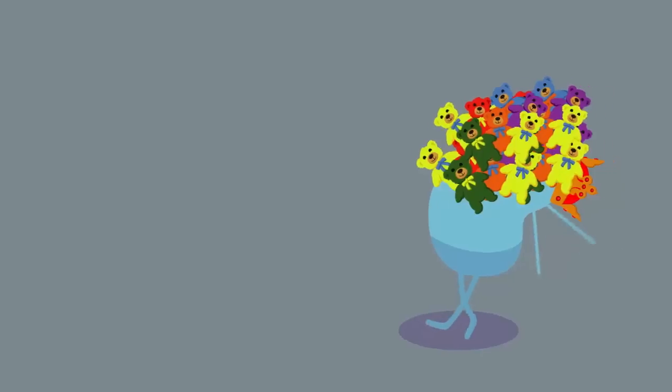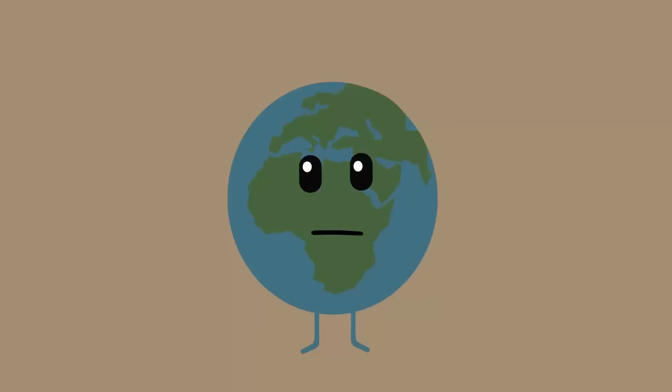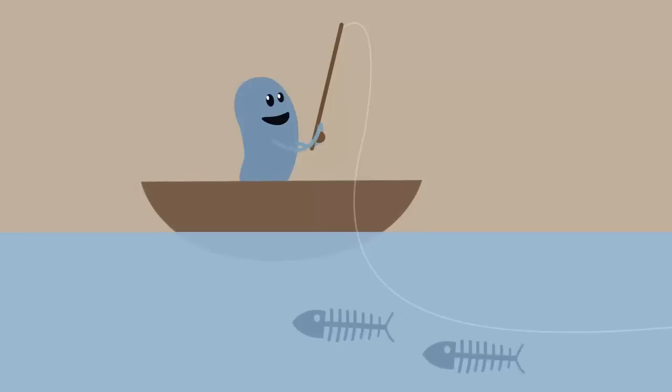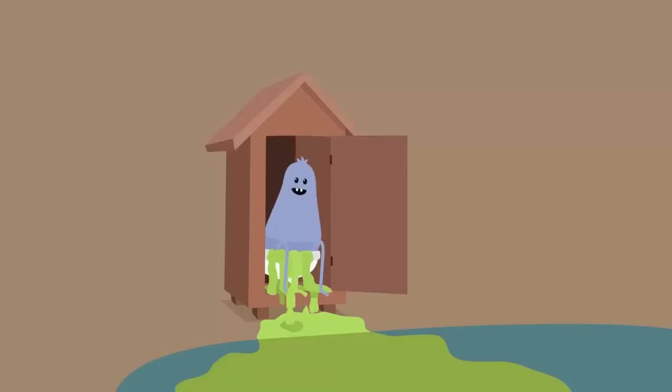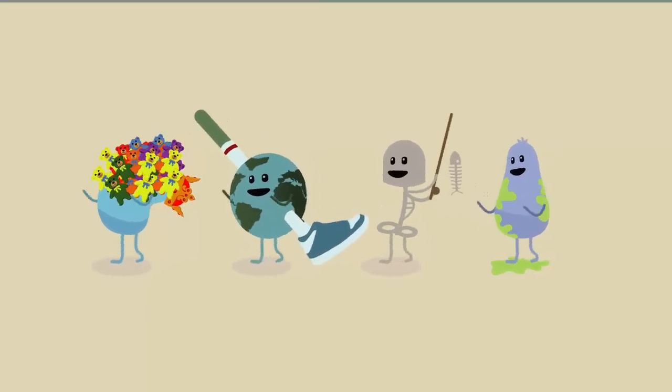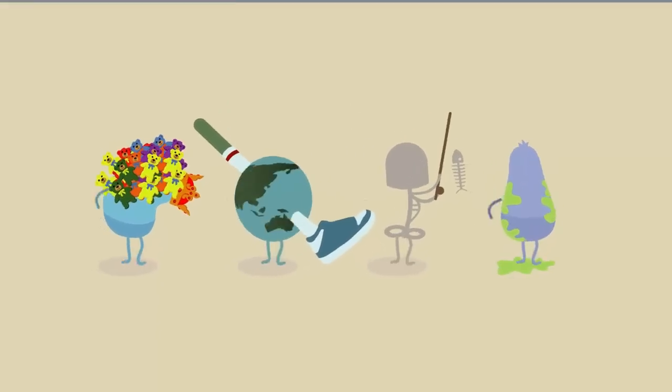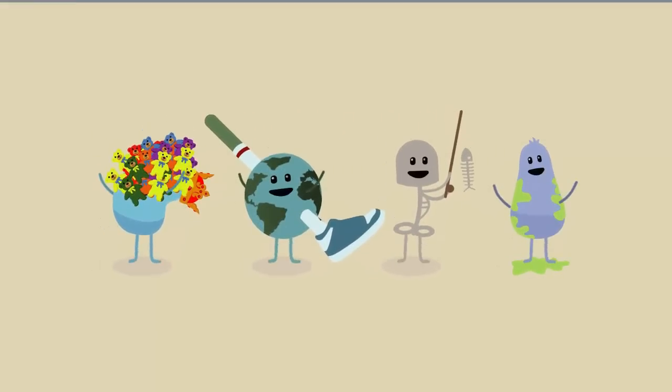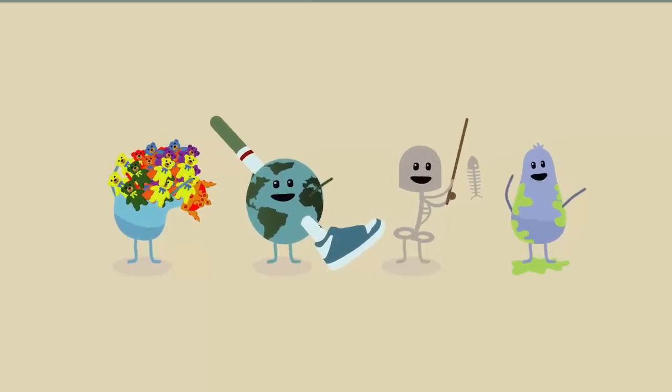Smother yourself in bears. Treat the earth like you just don't care. Eat all the fish in the sea. Fill the waters with your pee. Dumb ways to die. So many dumb ways to die.